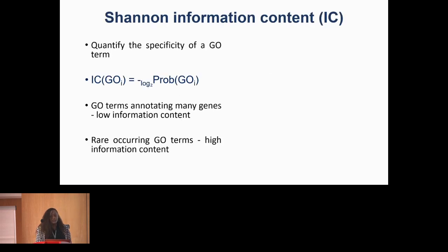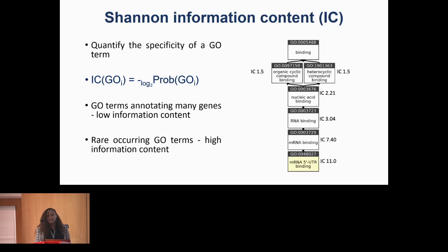Gene Ontology terms are hierarchical, starting with very general processes and descending to more specific ones. If a protein is annotated as 5' mRNA UTR binding, it automatically receives all parent labels. As we go up the tree, we find more general terms like 'binding', which doesn't tell us much about what the protein does — these terms annotate many genes and have low information content. But deeper in the tree, more specific terms like mRNA 5' UTR binding have high information content.